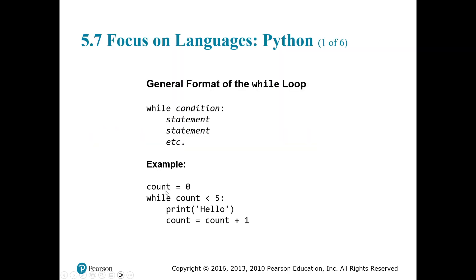Let's look at this example. We have a count variable set to zero. This loop will continue executing until count reaches five. While count is less than five — at zero it is less than five — so the code executes. We print 'hello' and then increment count: count equals count plus one. So now count is one.